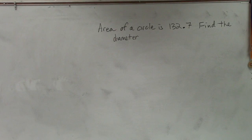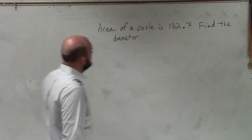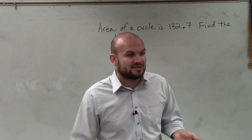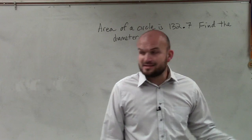Let's go and determine how we're going to find the area of a circle. We know the area of a circle is 132.7 square centimeters, and we want to find the diameter.